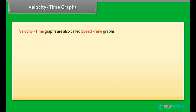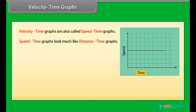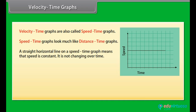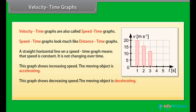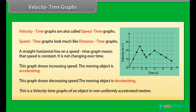Velocity-time graphs, also called speed-time graphs, look much like distance-time graphs. Time is plotted on the x-axis and speed or velocity on the y-axis. A straight horizontal line means speed is constant and not changing over time. An upward sloping graph shows increasing speed — the object is accelerating. A downward sloping graph shows decreasing speed — the object is decelerating. A curve on a velocity-time graph represents non-uniformly accelerated motion.